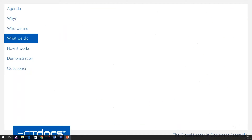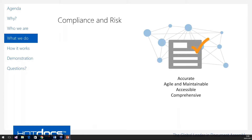So what do we actually do and how do we help our customers? A lot of our technology is around compliance and risk. How do you make sure that the documents you produce are accurate? How do you make sure they contain all the relevant information to comply with the rules and regulations of the industry bodies that govern your industry? How do you make sure that when a change happens with regulatory requirements and the law, you can easily update your documents to reflect that, so that every document produced from then on contains that relevant information? How do you make sure documents are comprehensive, agile, maintainable, and accurate?